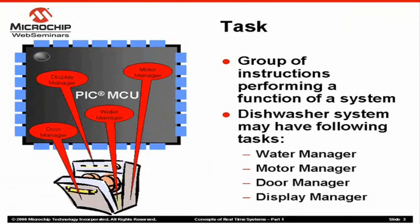So what is a task? A task is a group of instructions that execute on a microcontroller to solve a portion of the problem. This group of instructions performs a function of a system. For example, in a dishwasher system, the following tasks may exist: 1. Water manager — this task manages the water intake and drain. 2. Motor manager — this task manages the direction and speed of a motor according to the selected wash cycle. 3. Door manager — this task tracks the status of the dishwasher door and informs other tasks of the current status or any change in the status. 4. Display manager — this task tracks the status of various functions of the dishwasher and displays it on the LCD mounted on the front panel.